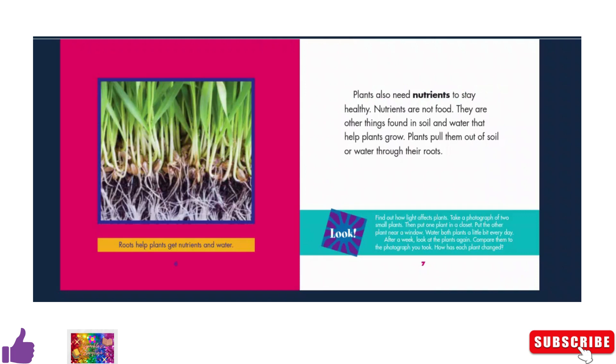You can take a photograph of two small plants, then put one plant in a closet. Put the other plant near a window. Water both plants a little bit every day. After a week, look at the plants again. Compare them to the photograph you took. How has each plant changed?